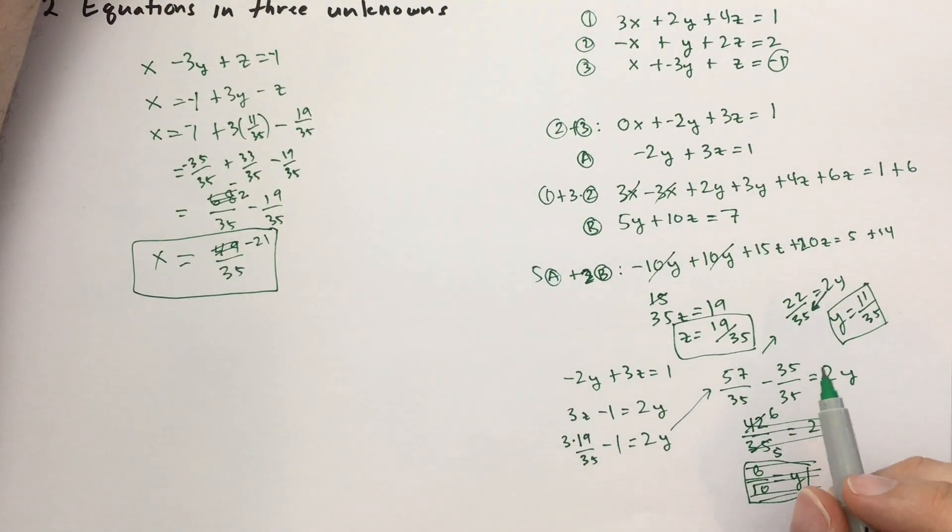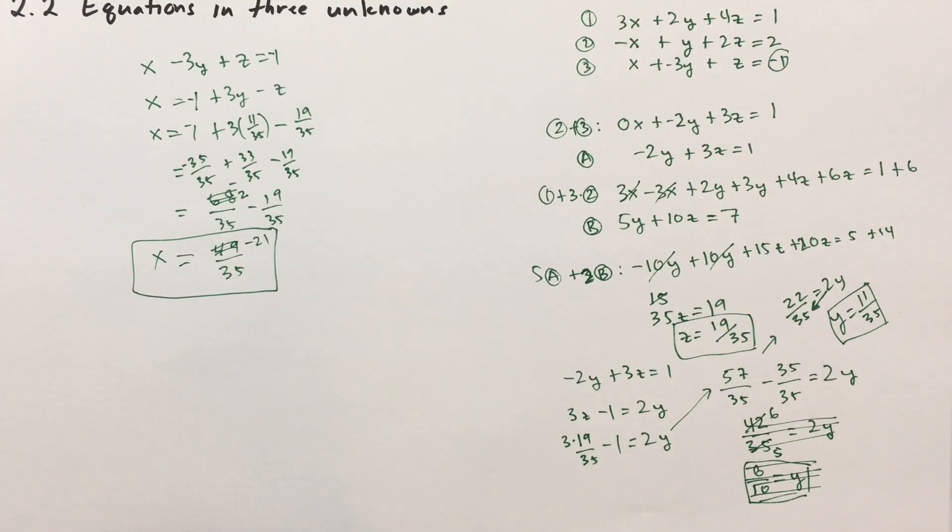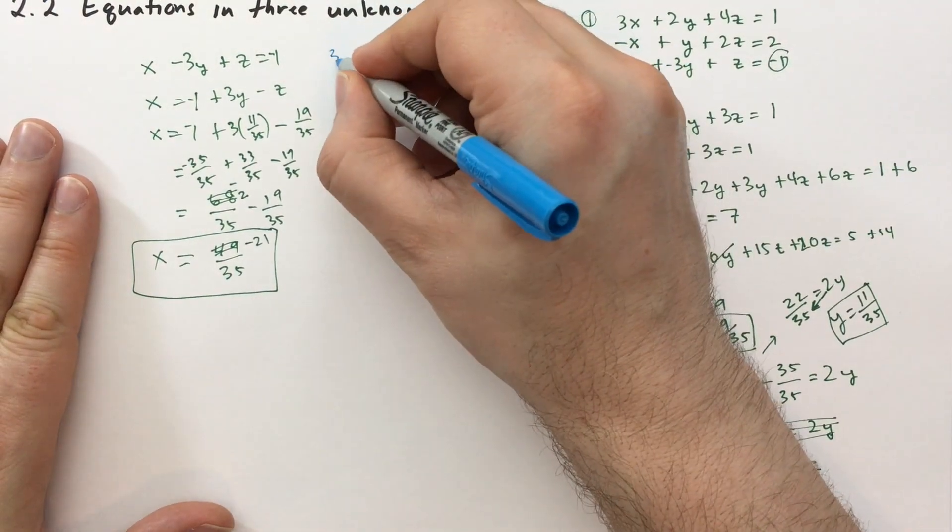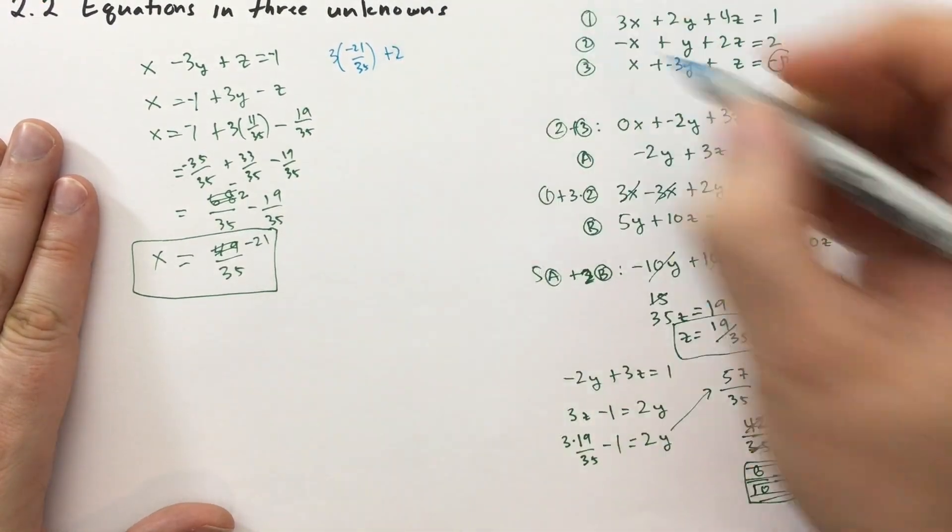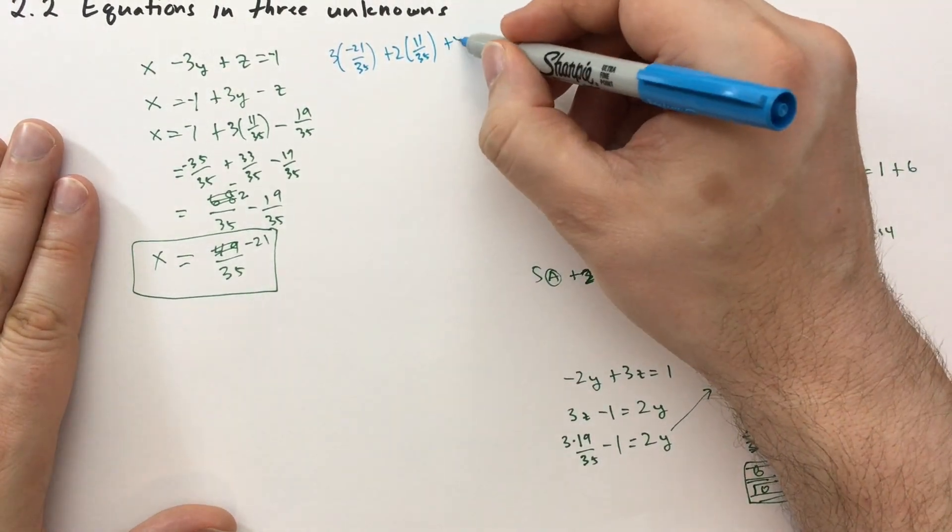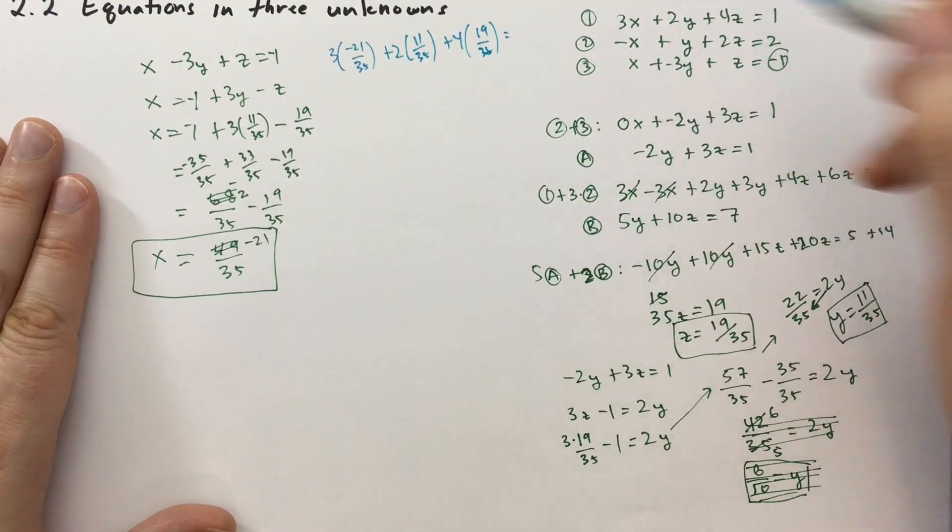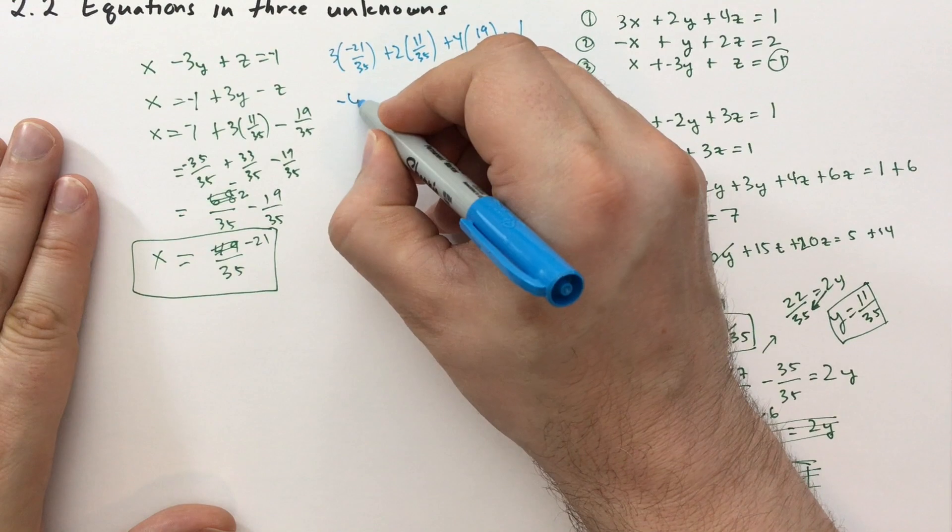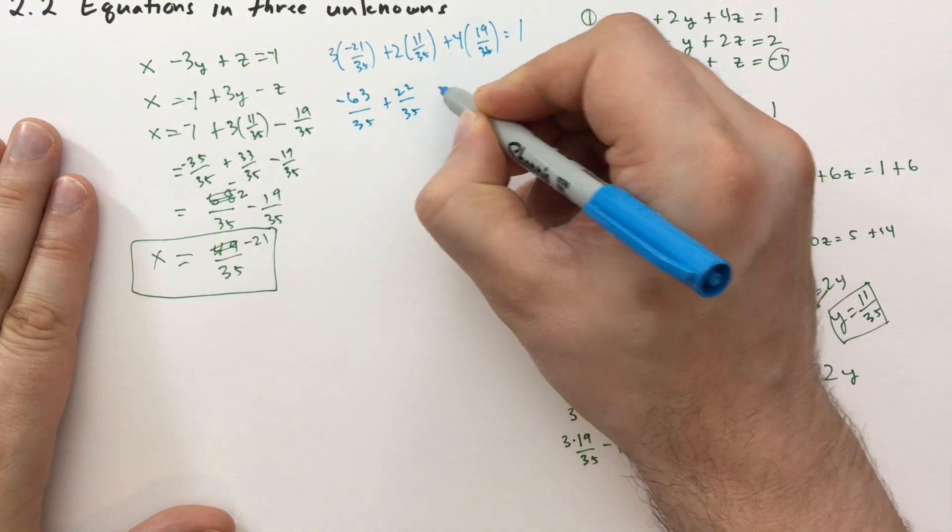So we have those three solutions. And I want to test it out. I'm going to use a different color to test it out. Let's use blue. Well, is it really worth it? Yeah, let's grab the first equation. So we have 3 times minus 21 over 35 plus 2 times 11 over 35 and then plus 4 times 19 over 35 and that has to equal 1. Okay. So we have minus 63 over 35 plus 22 over 35 plus, oh gosh, 4 times 19.